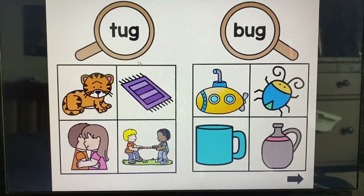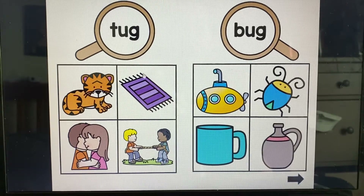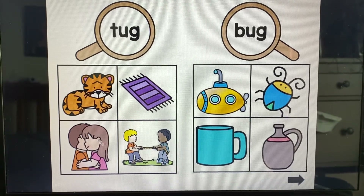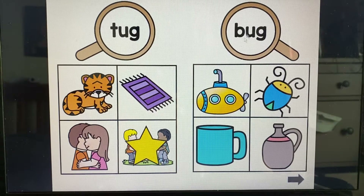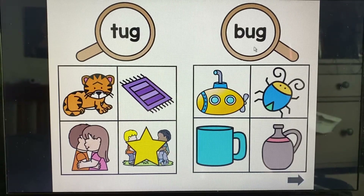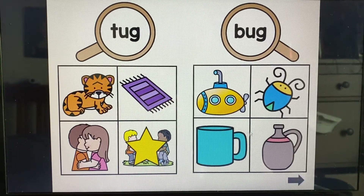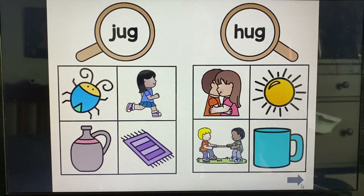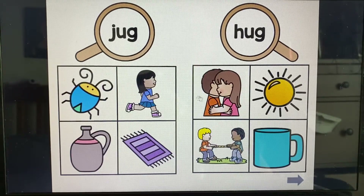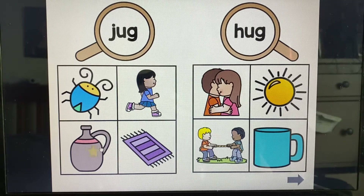All right, we're looking for a tug. Remember the boys were giving that rope a tug. There they are. We are looking for a bug. A big bug. Bug. All right, we're looking for a jug. Jug.